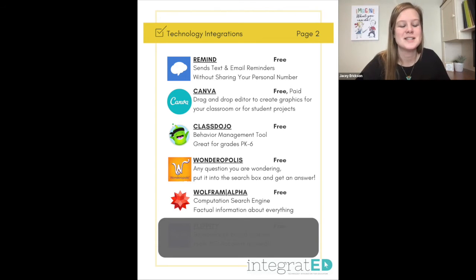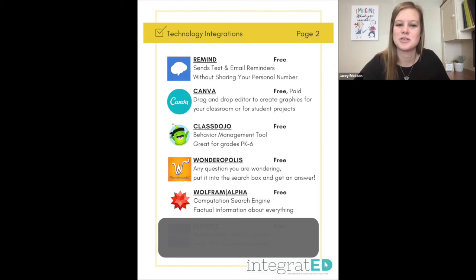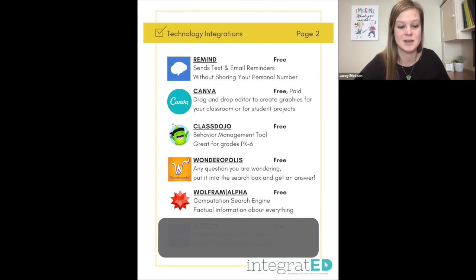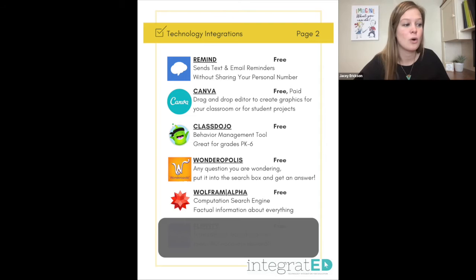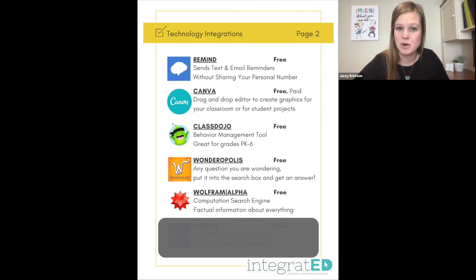Number eleven is Wolfram Alpha. This is a computational search engine, which means it's not going to return links to information — it's going to return factual information about anything and everything. You could type in George Washington and get factual information about him, or type in apples versus oranges and it will give you the nutritional value for both and compare the two. It's a great search engine for both students and teachers.